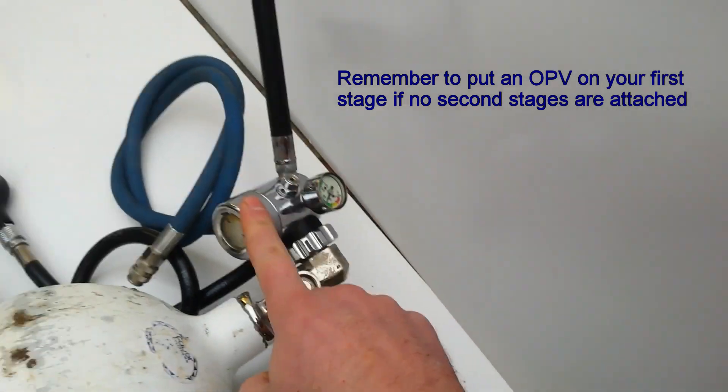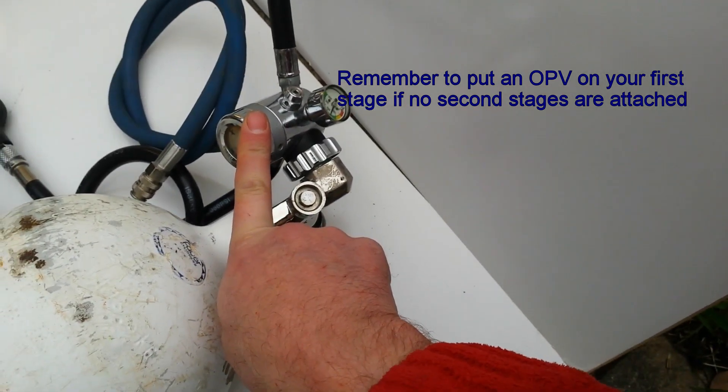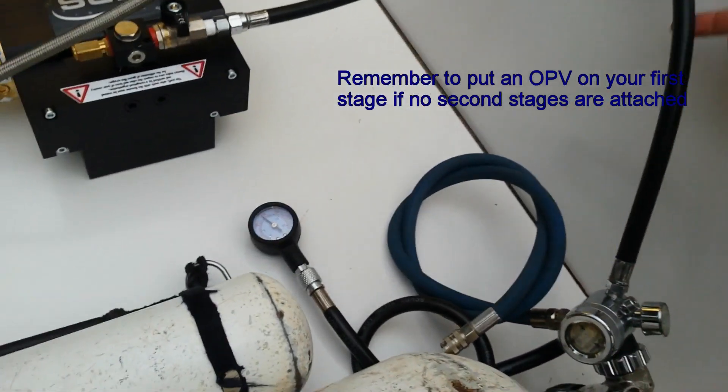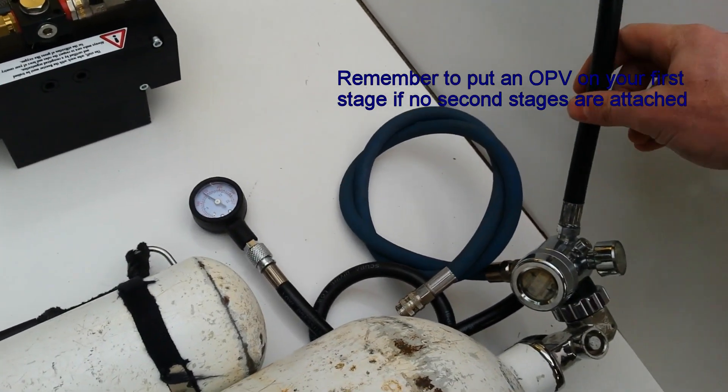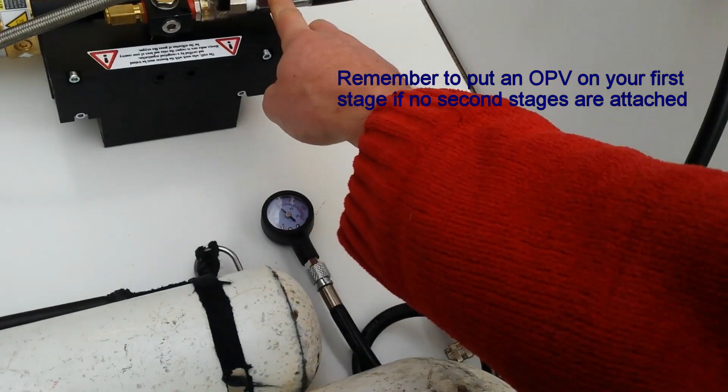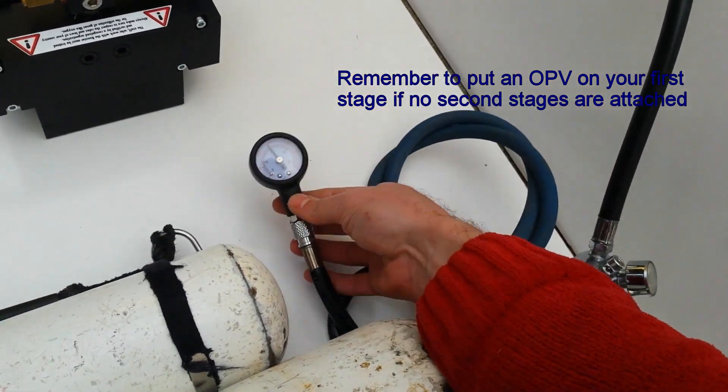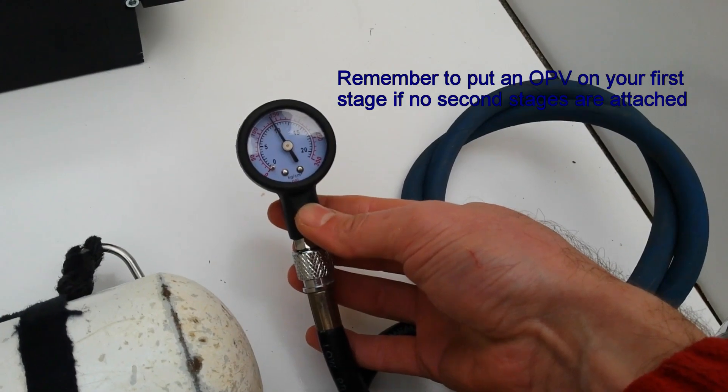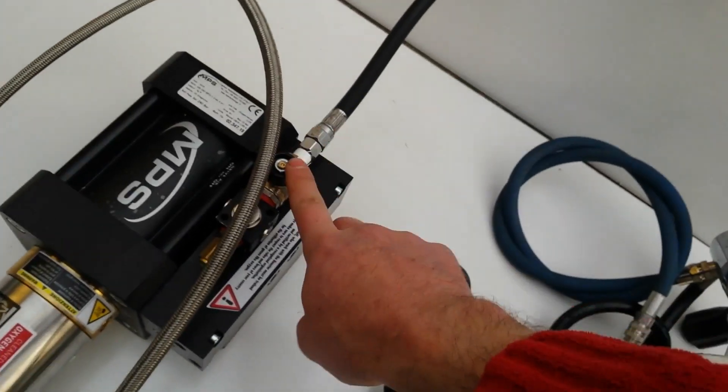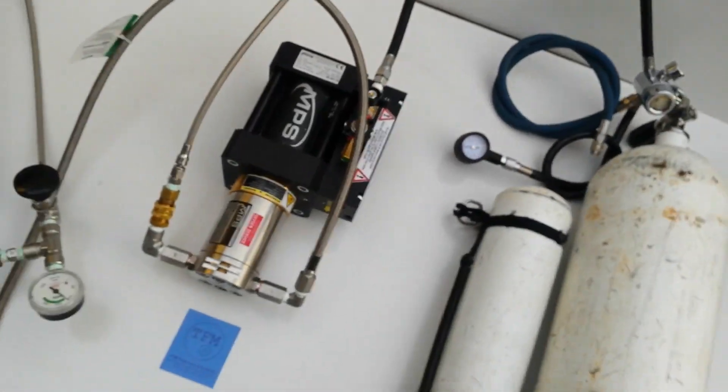There's about 160 bar of drive gas initially. Cylinder's fully open. That's an Apex DS4 first stage with a standard rubber reg hose, so it's got full flow. The IP is set to 10 bar, pretty standard. The valve is currently turned off so the boost is not running.